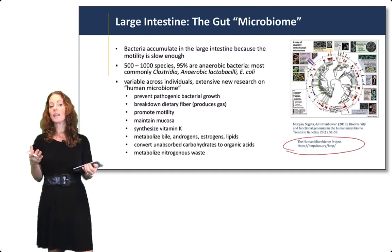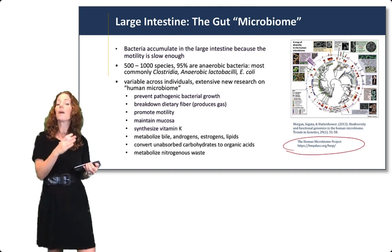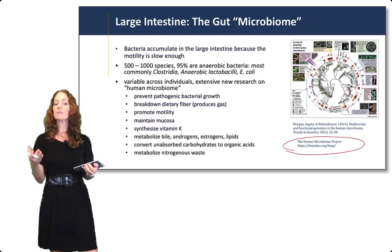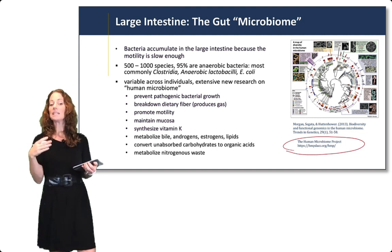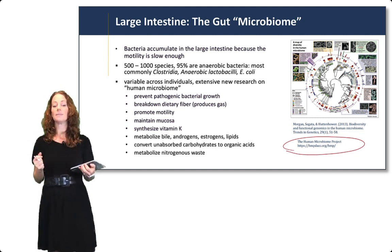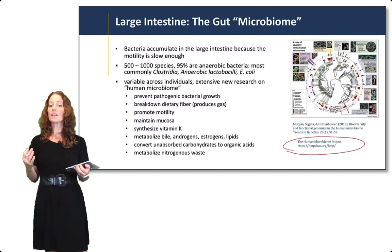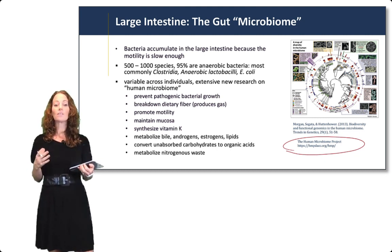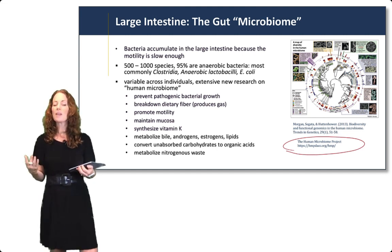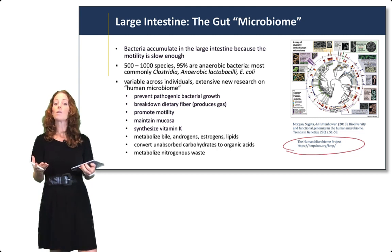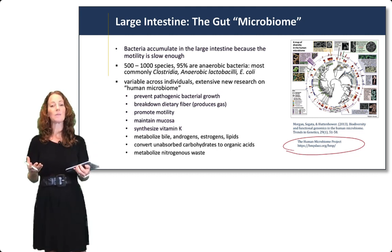What do we know about the microbiome? It helps prevent pathogenic bacterial growth — the presence of good bacteria prevents bad bacteria. It helps break down dietary fibers, which produces gas and promotes motility. It maintains the mucosa layer within the large intestine. The microbiome also synthesizes vitamin K, metabolizes bile, androgens, estrogens, and lipids, and converts unabsorbed carbohydrates into organic acids. Finally, it helps metabolize nitrogenous waste. We're finding out so many things about the good bacteria in our gut, and in the next several years you'll hear a lot more about this research.